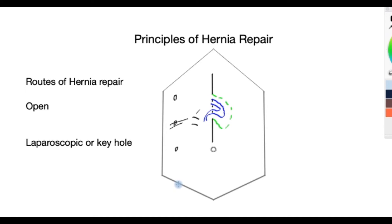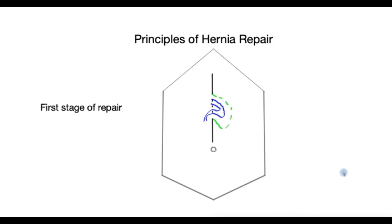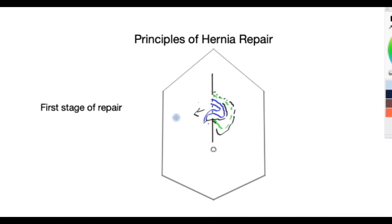The first stage of any hernia repair begins with the surgeon dissecting out the sac in a controlled manner, so that the sac is released from its surroundings as well as from whatever is inside it.